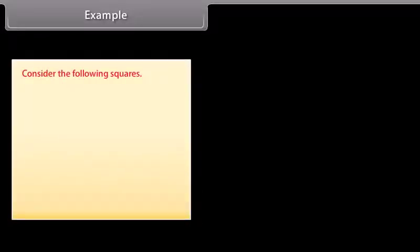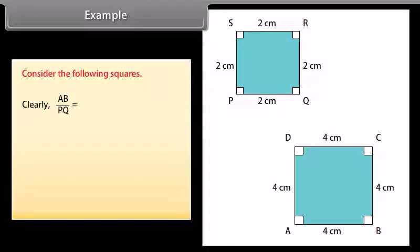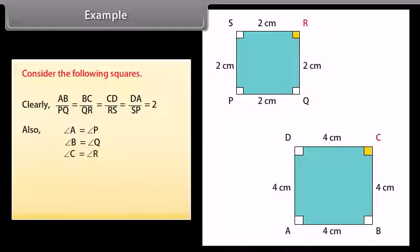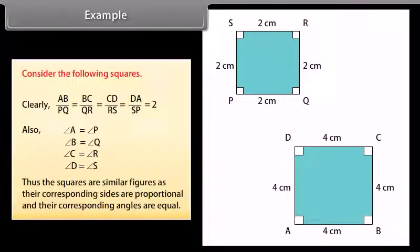Example: Consider the following squares. Clearly AB upon PQ equals BC upon QR, which equals CD upon RS equals DA upon SP, which is equal to 2. Also, angle A equals angle P, angle B equals angle Q, angle C equals angle R, angle D equals angle S. Thus, the squares are similar figures as their corresponding sides are proportional and their corresponding angles are equal.